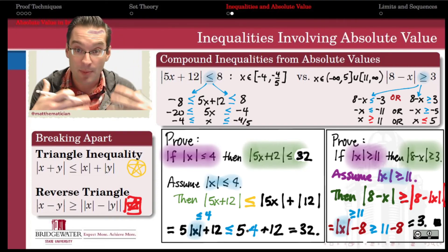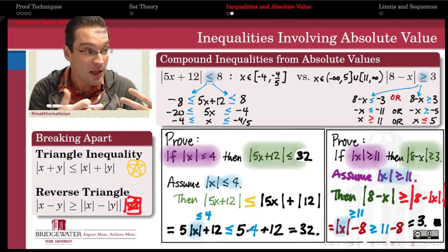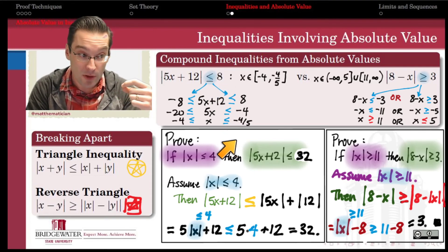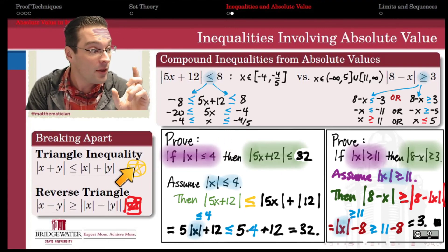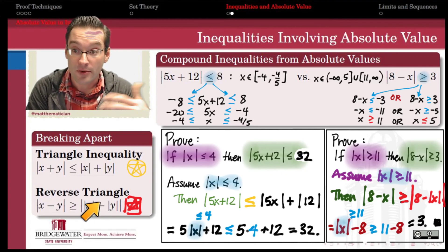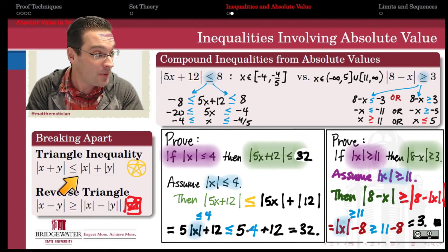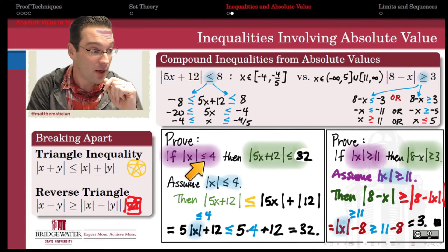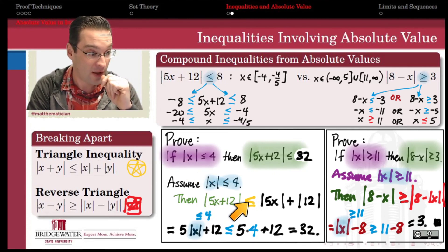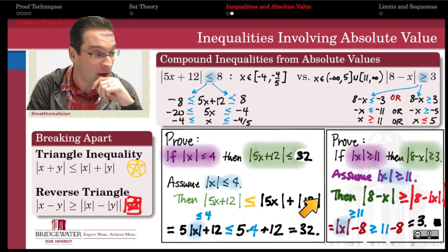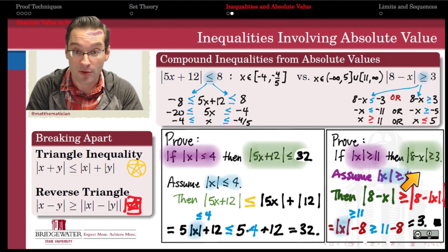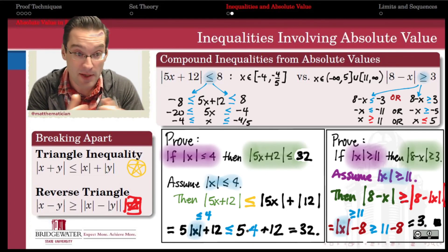These are the extra steps you need when absolute value comes into play. If you're solving an inequality, break it into a compound inequality and solve each piece individually. But more frequently in real analysis, when using an absolute value inequality in a proof, the triangle inequality and its alter ego the reverse triangle inequality are your tools. When bounding an absolute value from above — less than or equal to — use the triangle inequality. When bounding from below — greater than or equal to — the reverse triangle inequality is what you need.